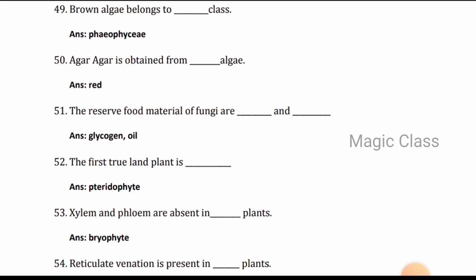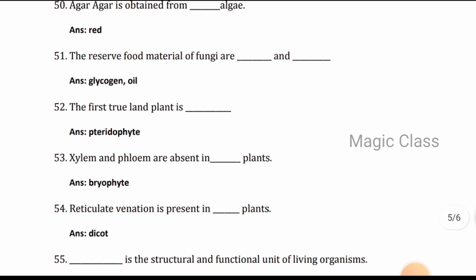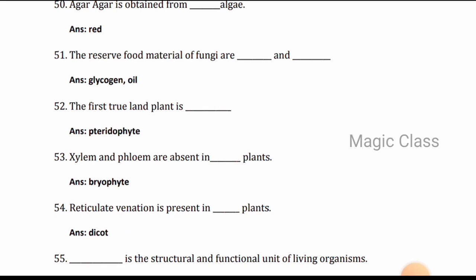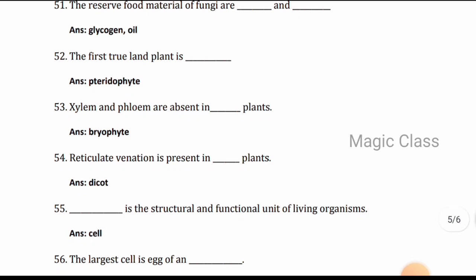Question 50: Agar agar is obtained from red algae. Question 51: The reserve food material of fungi are glycogen and oil. Question 52: The first true land plant is pteridophyte. Question 53: Xylem and phloem are absent in bryophyte plants.